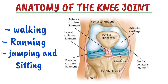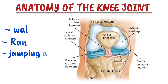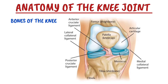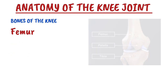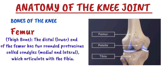Let's get started with the bones of the knee. The knee joint is formed by the articulation of three main bones: the femur, the tibia, and the patella. The femur is also called the thigh bone, and the distal or lower part of the femur has two rounded protrusions called condyles.